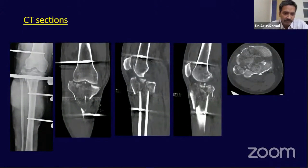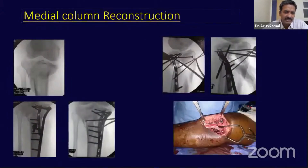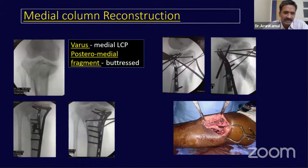We performed a CT scan to plan the surgery. There was comminution in the central portions with a split medial condyle — anteromedial and posteromedial fragments — with a small posteromedial fragment due to the comminution. We decided on a two-plate construct: a medial locking plate to address the varus, and a one-third tubular plate to buttress the posteromedial fragment.